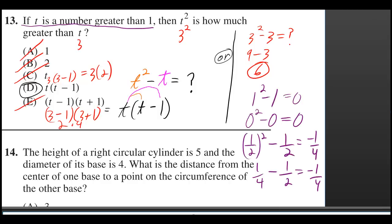In case you're wondering why they said if t is a number greater than one. If you try using one, you get zero for t squared minus t. If you try using zero, you get zero for t squared minus t.